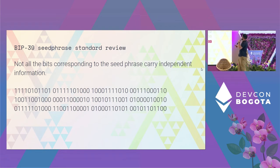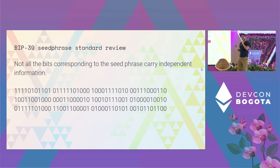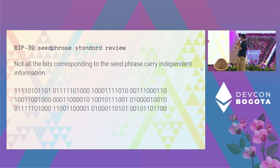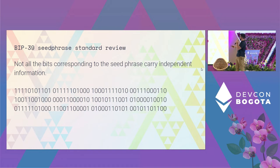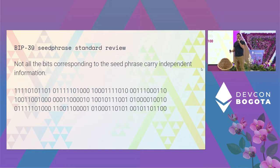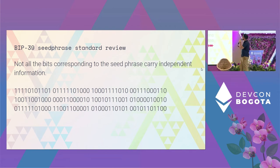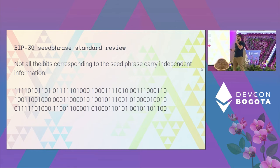Not all the bits in a BIP39 seed phrase carry independent information — there's a checksum hidden in there. For a 12-word phrase, the last four bits are not independent. What they carry is a checksum: take all bits except the last four, compute SHA-256 of that in binary, and the first four bits of that hash are what go in those last four positions. This is there so that wallet software can detect if you miswrite a word. Since those bits are not independent information, there's no need to include the checksum bits for share generation or reconstruction.